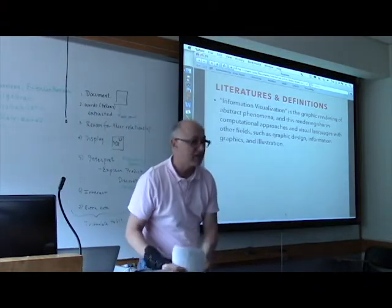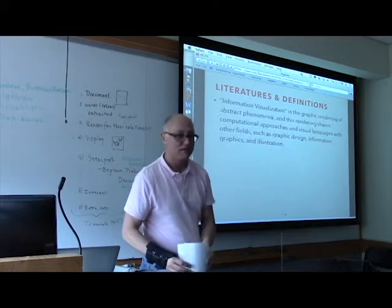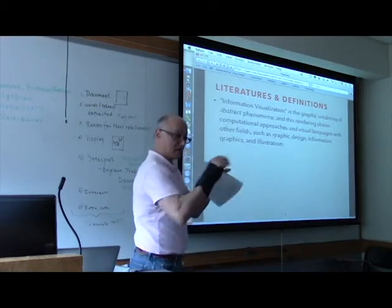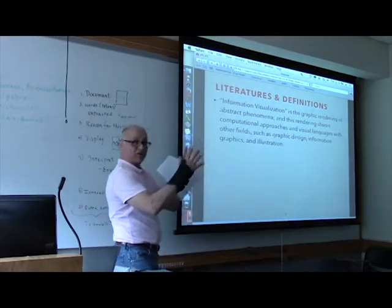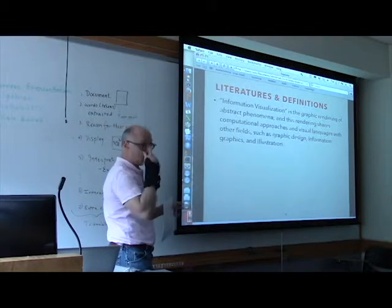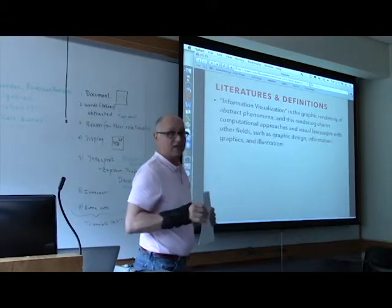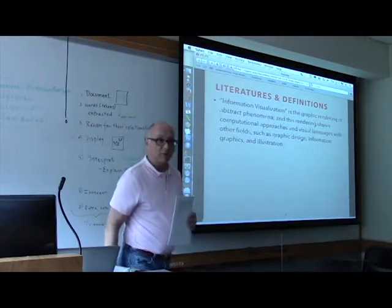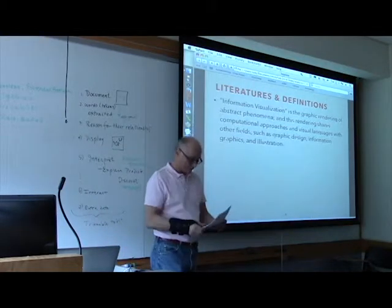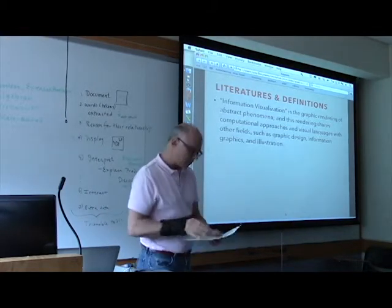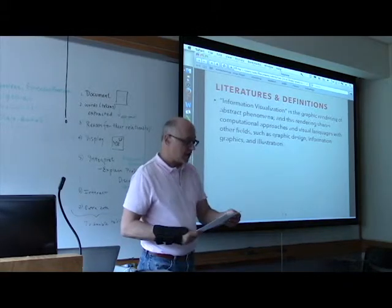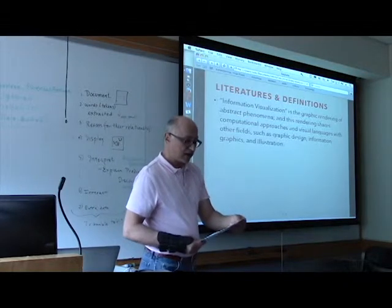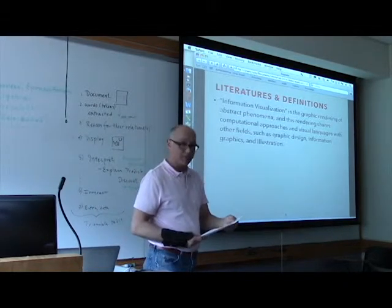Some literary definitions: what is it? It is a representation of abstract phenomena — this is a very important point. It is not scientific data. If you had data that represented a mosquito and you studied the software and it looked like a mosquito, that's scientific visualization, not information visualization. Information visualization is the representation through visual language of an abstract phenomenon. That's really important. One famous 1999 definition: 'the use of computer-supported, interactive visualization of abstract data to amplify cognition' — that's pretty famous, by Card.